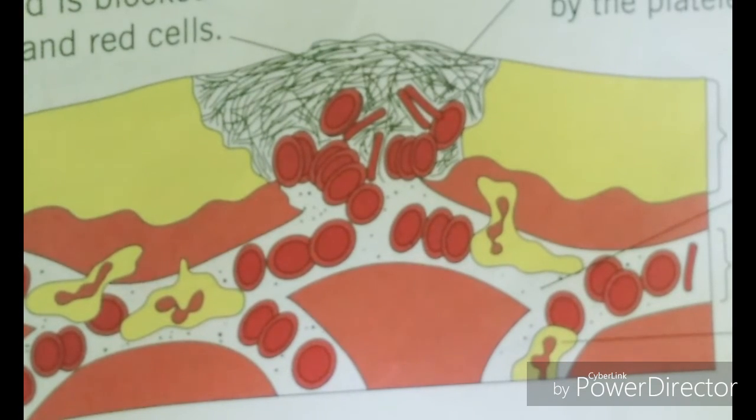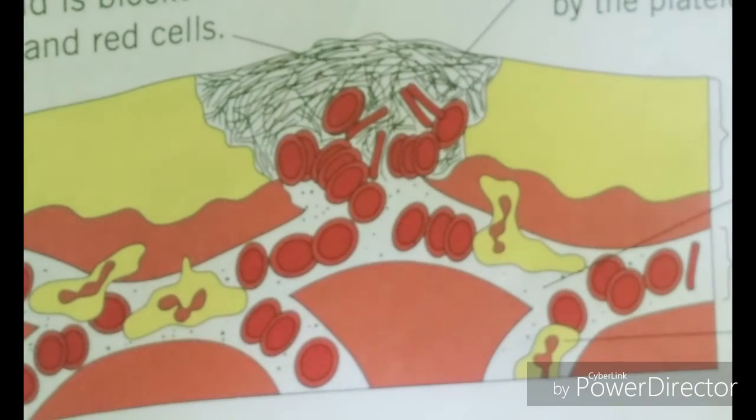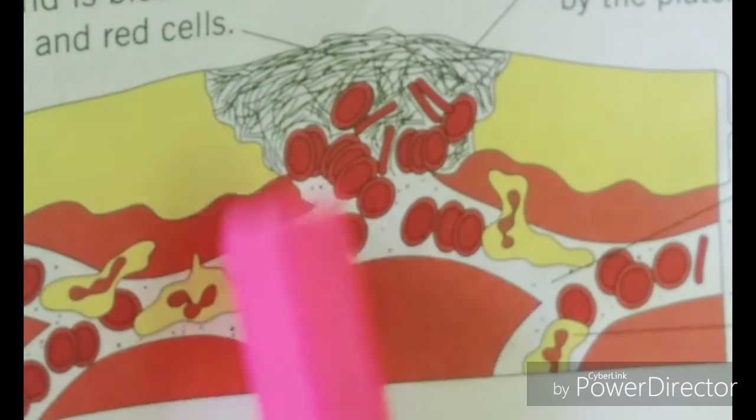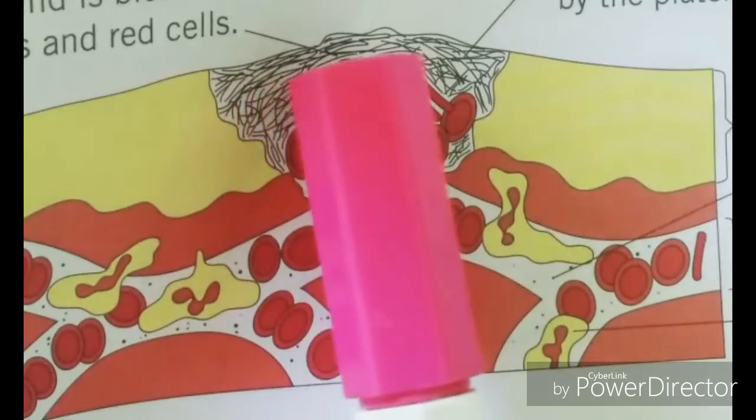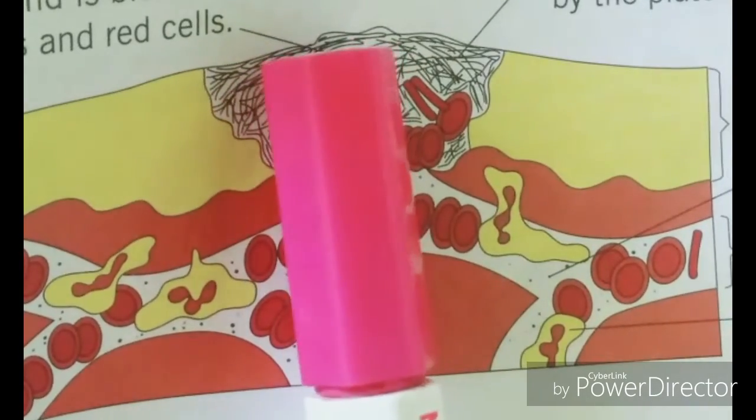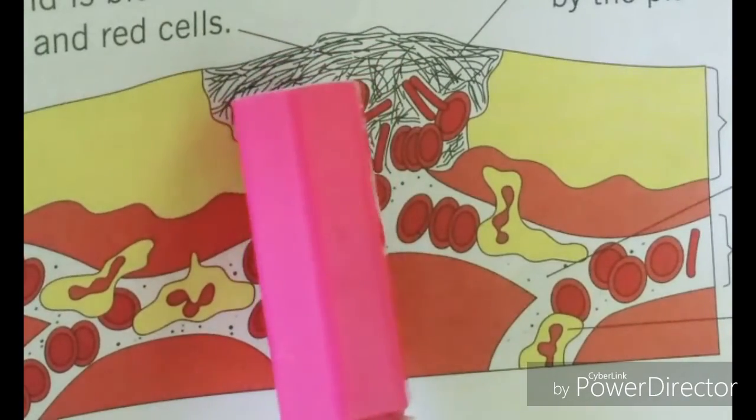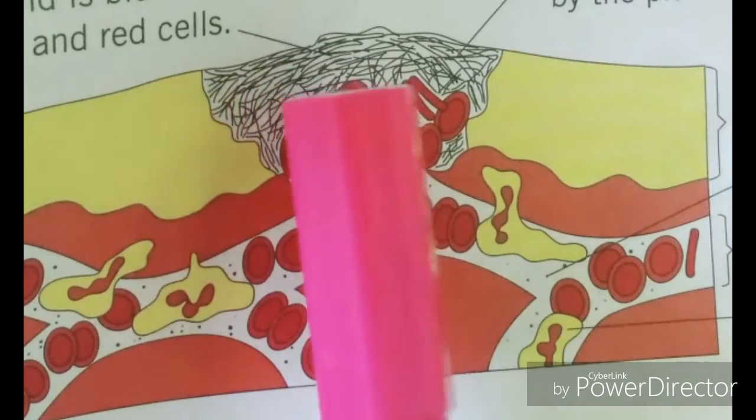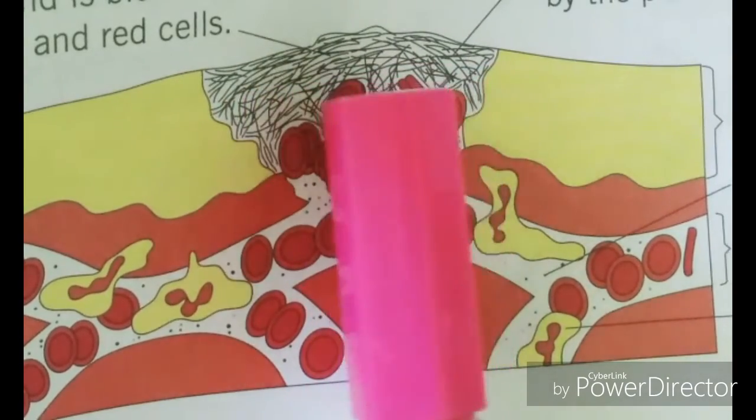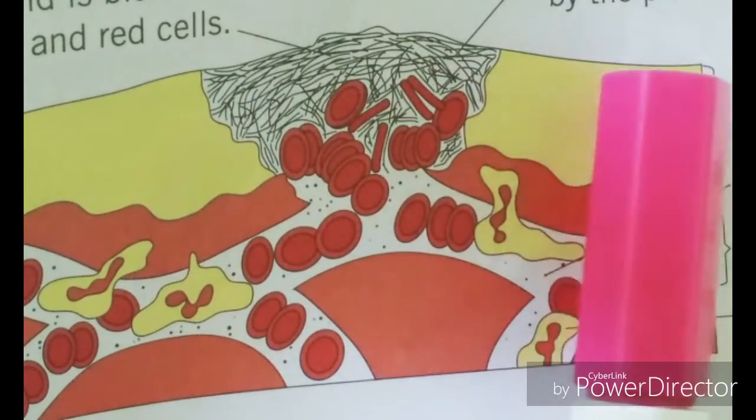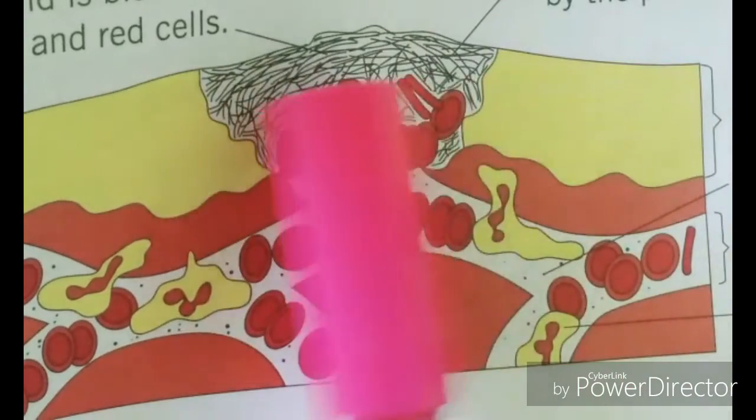This is a diagram. As you can see, this black portion shows the wound blocked by fibers and red cells. The fibers are produced by the platelets. This is the skin, these are the platelets and capillaries.